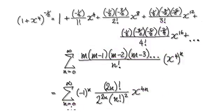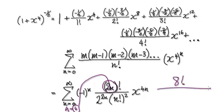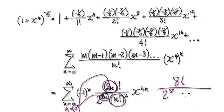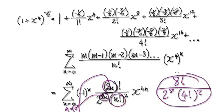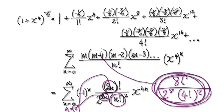When n equals 4, we put it into here: that would be 8 factorial divided by 2 to the power of 8, and then 4 factorial squared. And if you sit there and work this out, it actually equals this whole thing here.